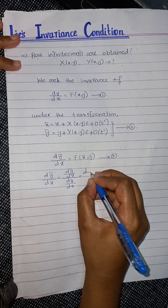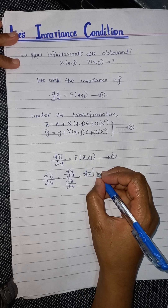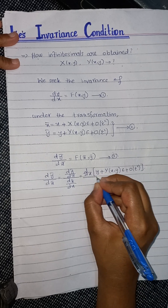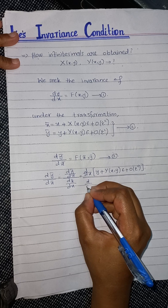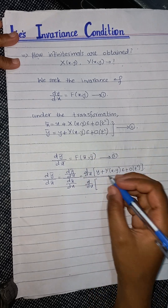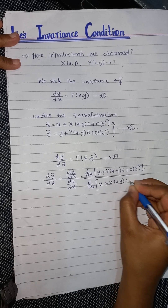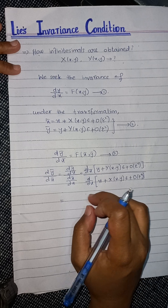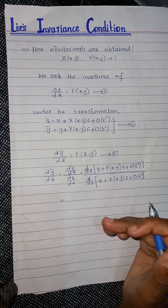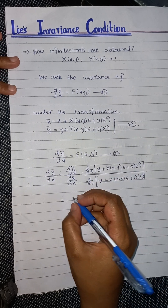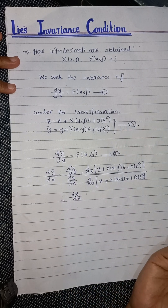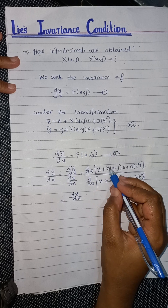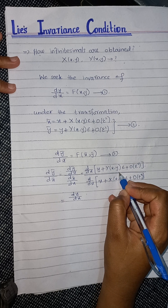If I substitute the value of ȳ in the numerator, I get: d/dx of [y + Y(x,y)·ε + O(ε²)]. And similarly in the denominator, d/dx of x̄, which is x + X(x,y)·ε + O(ε²). Now we apply the derivative on these terms. Taking the derivative of y gives dy/dx. For the derivative of capital Y(x,y), since y is a function of two variables, we apply the chain rule.